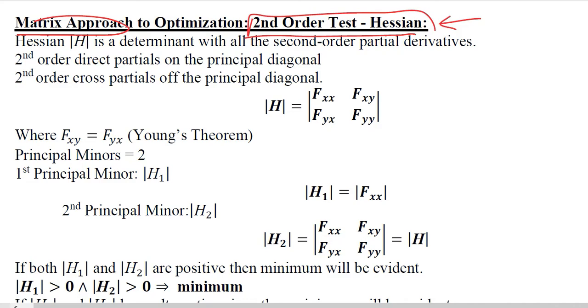It's represented by |H| determinant. As you can see we have highlighted this, and it is a determinant in which we have second-order partial derivatives - all of them.